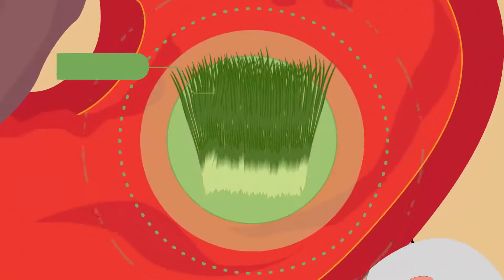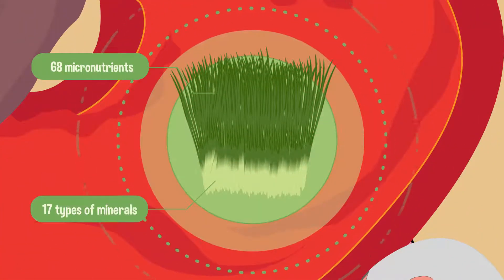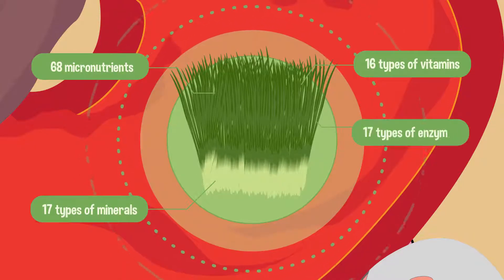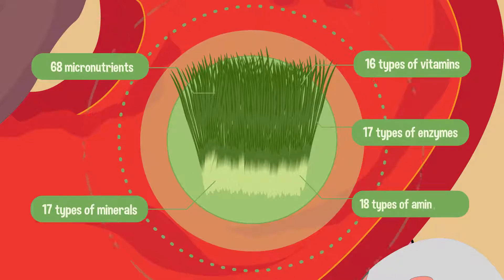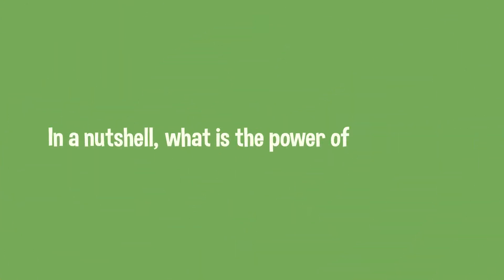There are 68 micronutrients found in barley leaves, 17 types of minerals, 16 types of vitamins, 17 types of enzymes, and 18 types of amino acids. In a nutshell, what is the power of barley?